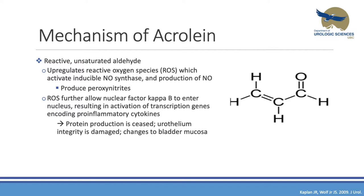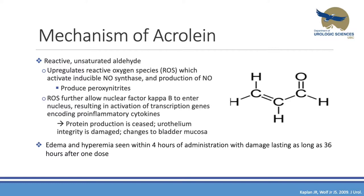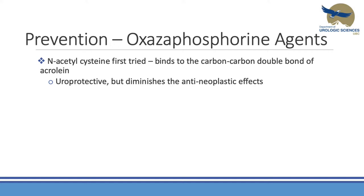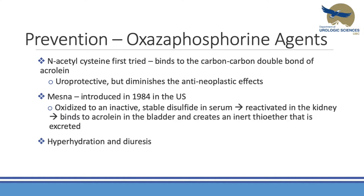Acrolein causes DNA strand breaks and results in overactivity of the DNA repair enzyme PARP, which depletes intracellular ATP leading to necrosis. Furthermore, reactive oxygen species allow nuclear factor-kB to enter the nucleus, activating transcription genes which produce pro-inflammatory cytokines such as TNF-alpha and interleukin-1, causing urothelial damage and changes to bladder mucosa including bleeding, swelling, and ulceration. Edema and hyperemia can be seen within four hours of administration and effects can last up to 36 hours after a single dose. The best treatment is prevention; N-acetyl cysteine was tried first but diminished the neoplastic effect of the drug.